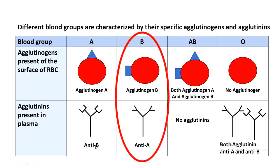Blood group B has agglutinogen B, represented by a square shape, and it does not have agglutinins anti-B. Instead it has agglutinins anti-A with a triangular shape, so they are not complementary to agglutinogen B and cannot bind to each other. Blood group B has agglutinogen B and agglutinins anti-A in the plasma.